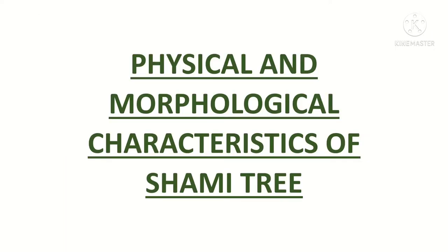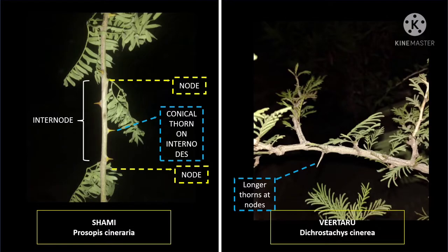Based on physical and morphological characteristics of the shami tree, let's try to identify genuine shami. This is genuine shami and this is veertharu. Shami's biological name is Prosopis cineraria and veertharu's biological name is Dichrostachys cinerea. Now let's try to identify them.